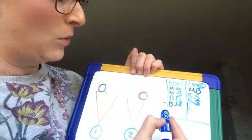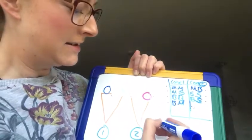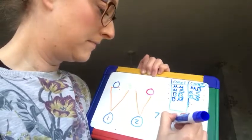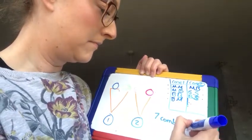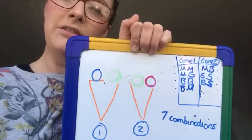So so far we've got one, two, three, four, five, six, seven combinations. How many can you find?